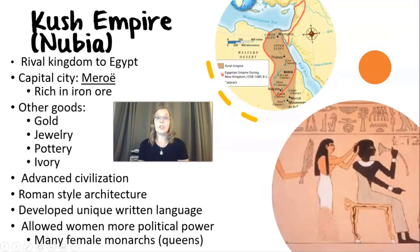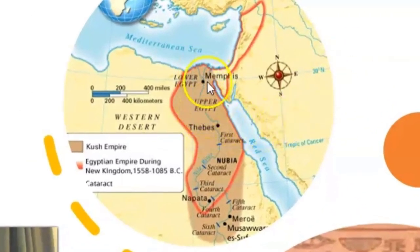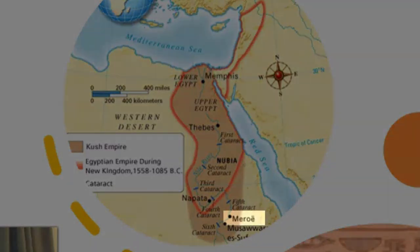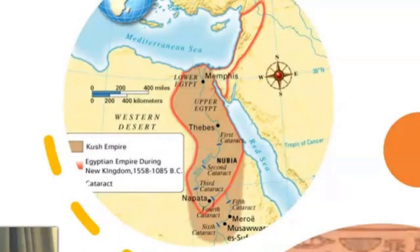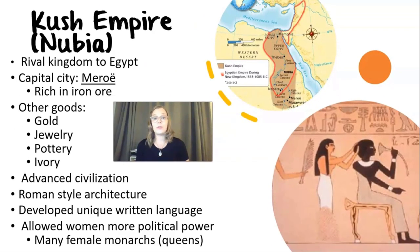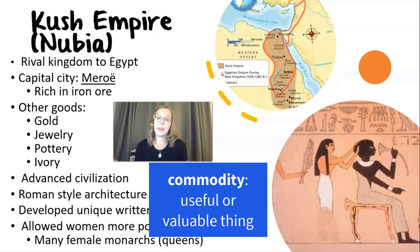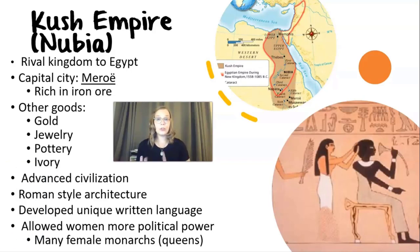Another important civilization is called the Kush empire, also known as Nubia. Nubia was a major rival of Egypt — south of Egypt, just below the Delta and lower and upper Egypt. The capital of Nubia is in the city of Meroe, which was very rich in iron ore, very useful at the time for tools and weapons. Other goods that made them very wealthy included gold, jewelry, pottery, and ivory — all traded in and out of the Kush empire.